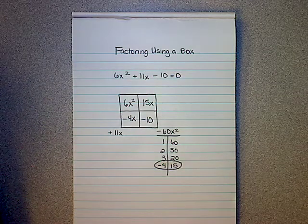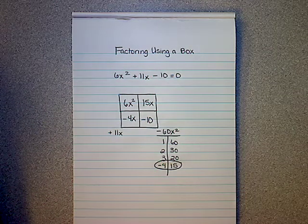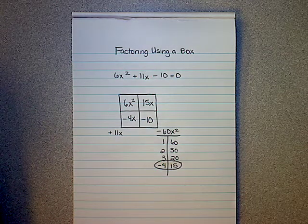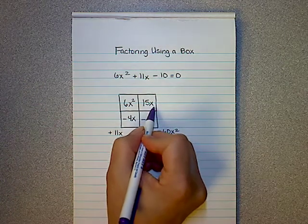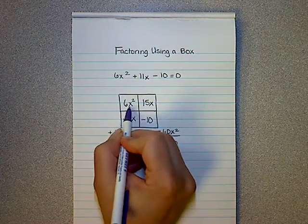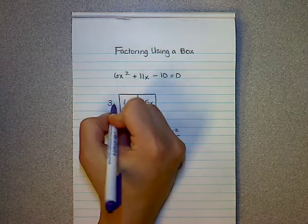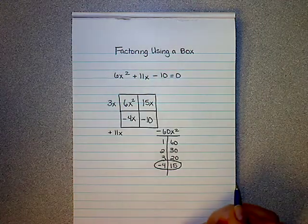Now I have everything I need to just go ahead and look for the greatest common factor so I can factor it completely. Both the first two values horizontally have an x and a 3 in common. So 3x, that is their greatest common factor.